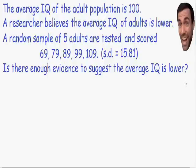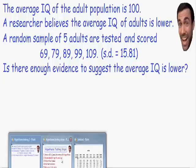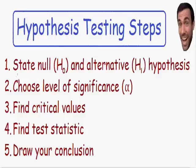Although this example is different than my first video on hypothesis testing, the steps are going to remain exactly the same. So, let's go over all of the steps to perform a hypothesis test. Step number one says to state the null hypothesis, written with H sub zero or H naught, and the alternative hypothesis, written with H sub one or H sub a.